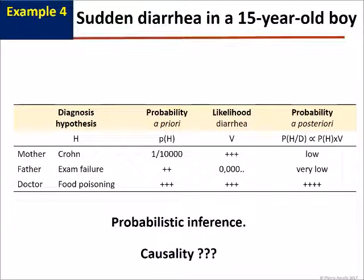But let's be careful. This is a probabilistic type of reasoning. It does not allow us to affirm causality. Perhaps there is another cause for this diarrhea. One could simply say that the doctor is not necessarily right, but that he is somehow more right than the teenager's parents.